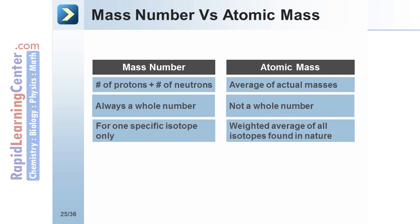However, the atomic mass is a weighted average of all of the isotopes. Carbon has an atomic mass of 12.01. That represents all of the isotopes of carbon.